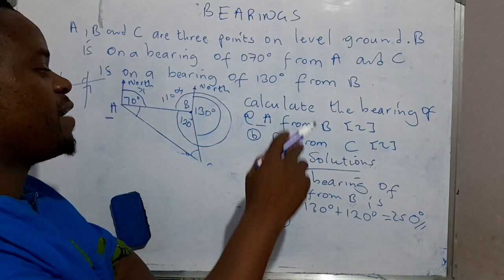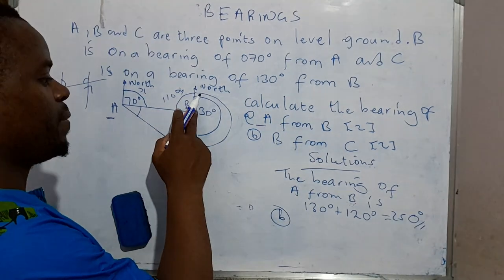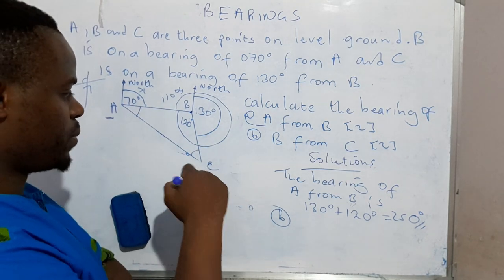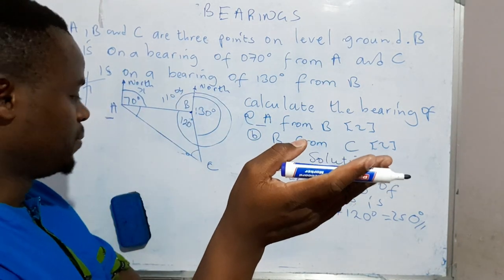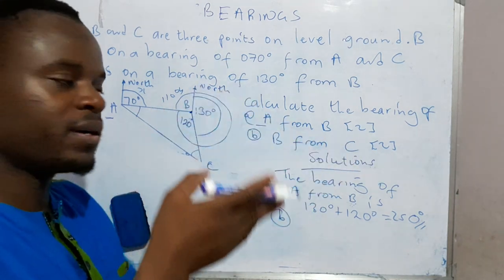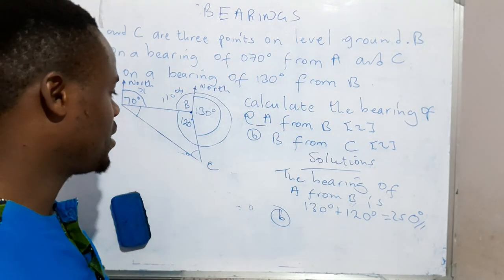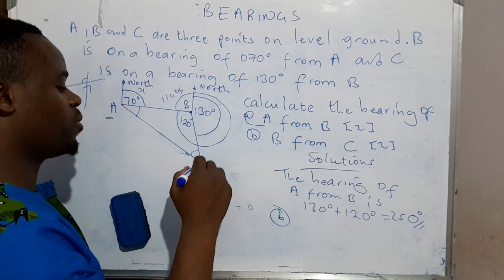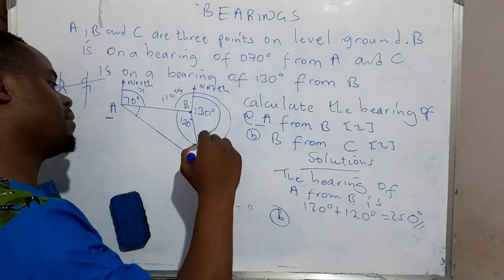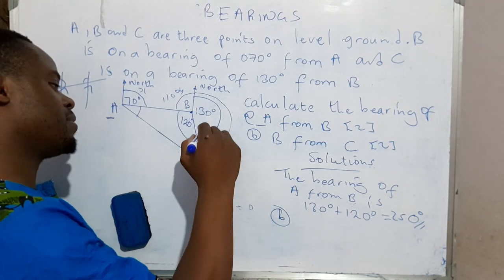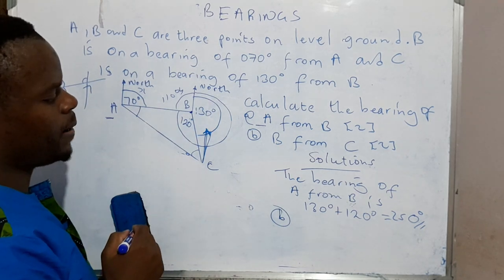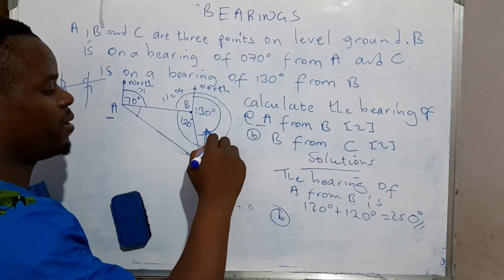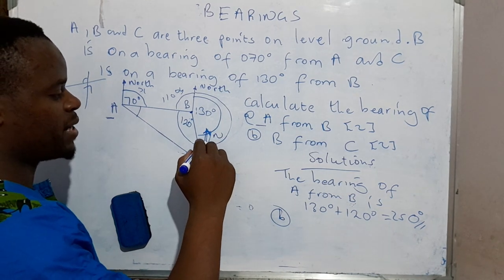They're saying find the bearing of B from C. So now I told you earlier on that the word 'from' matters the most. It's very important. So when they're saying from C, on that point draw the north. So you're drawing the line here. It has to be straight.